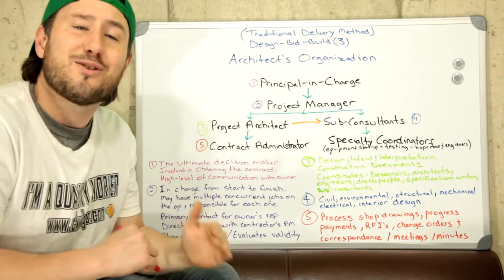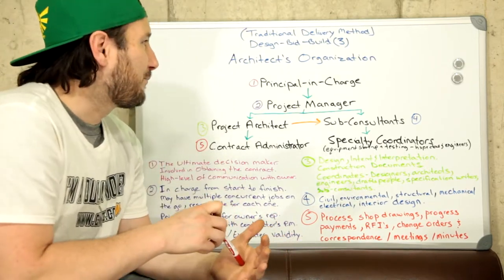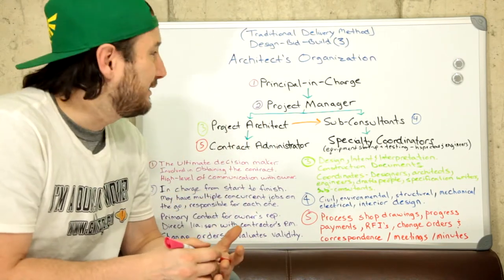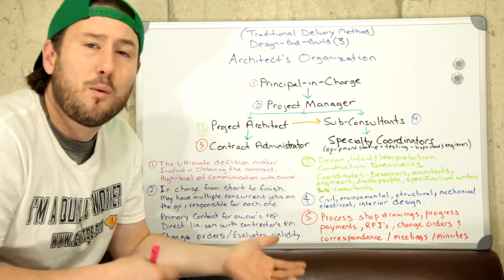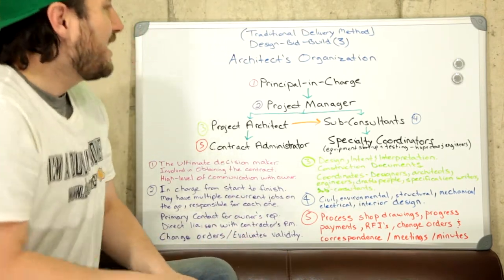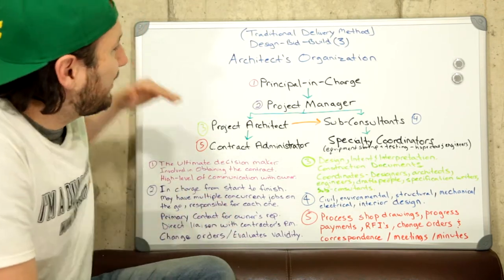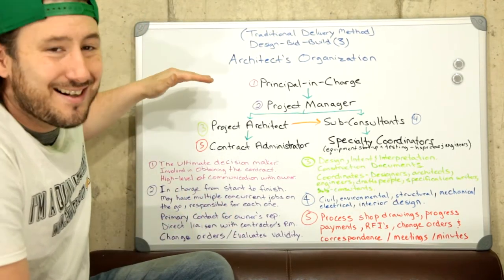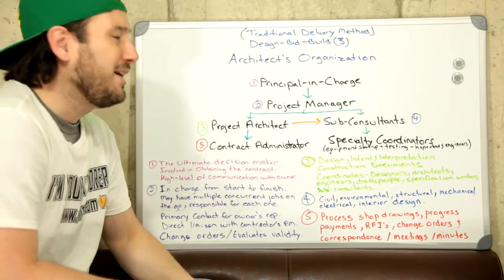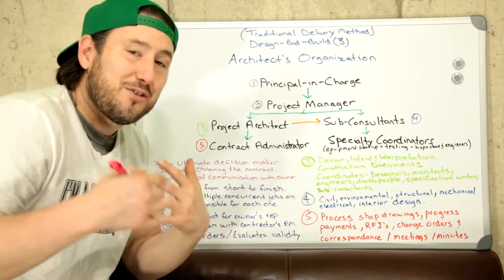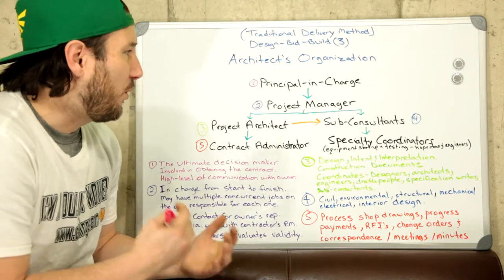This is the traditional delivery method — design-bid-build — and this is the architect's organizational matrix. We've gone over the owners and the general idea of design-bid-build, and also discussed what types of contracts come from where. The idea of showing you all this is so that you can study for your PMP certification or just learn more about the delivery method.